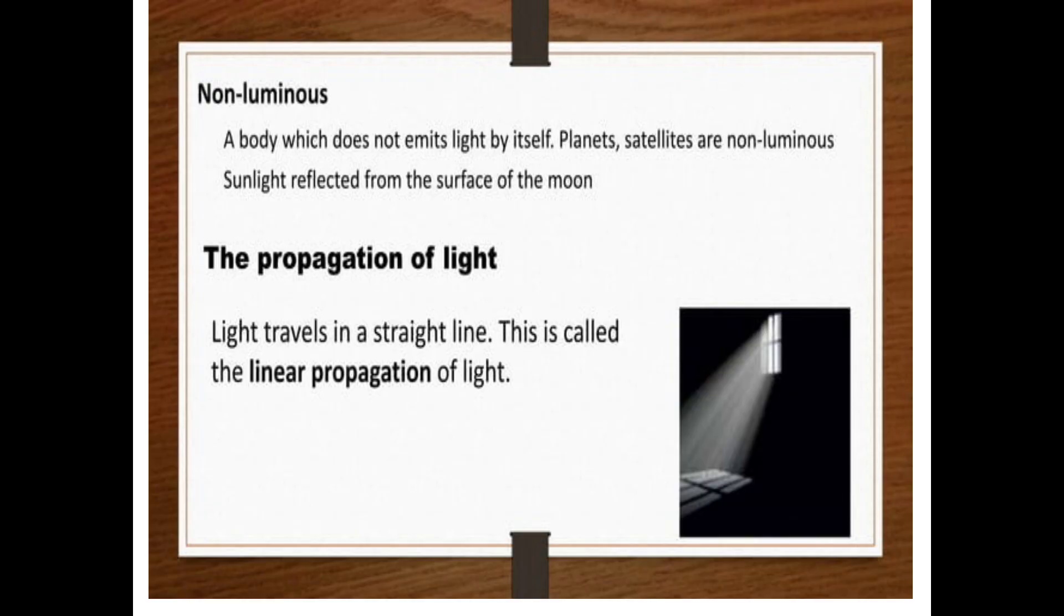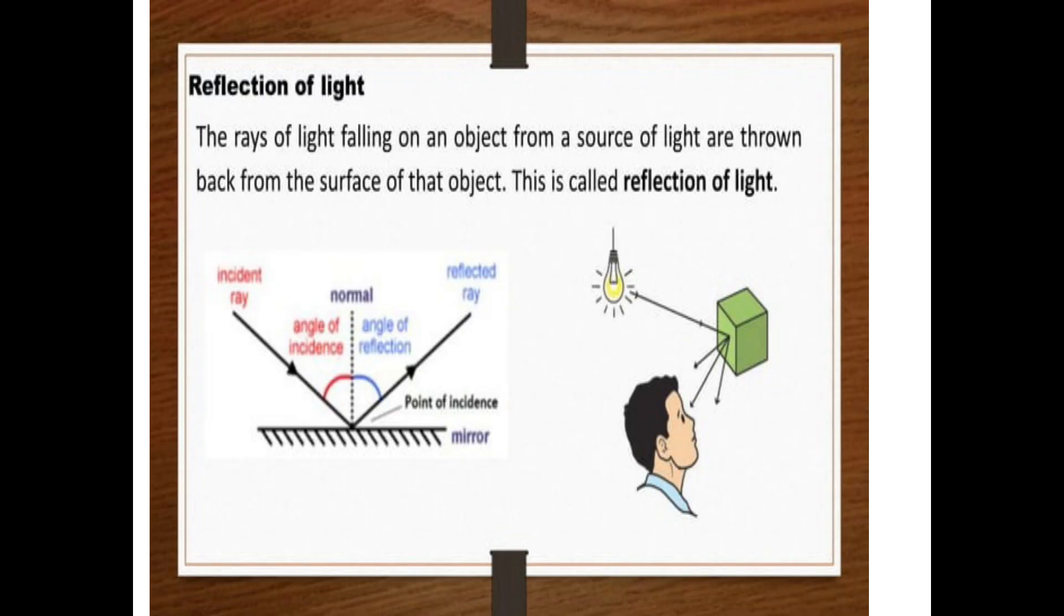The propagation of light. It means how does light travel from one point to another point. Light travels in a straight line. This is called the linear propagation of light. Reflection of light: the rays of light falling on an object from a source of light are thrown back from the surface of that object. This is called the reflection of light.